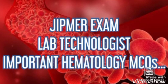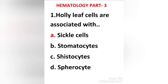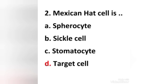First question: Holly leaves cells are associated with — (a) sickle cells, (b) stomatocytes, (c) schistocytes, (d) spherocytes. The right answer is option A: sickle cells. Holly leaves cells are associated with sickle cells. The unique morphology of sickle cells is a result of hemoglobin polymerization at low oxygen saturation of the blood.